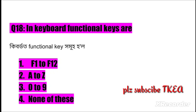Question number eighteen: In a keyboard, how many functional keys are there? Option one: F1 to F12, two: A to Z, three: 0 to 9, four: none of these. The right answer is number one: F1 to F12.